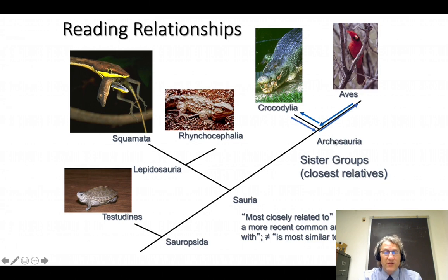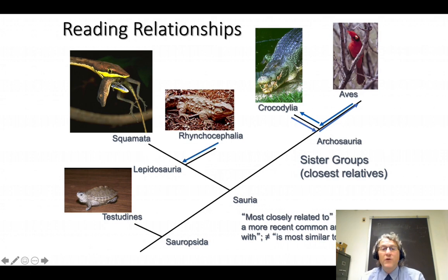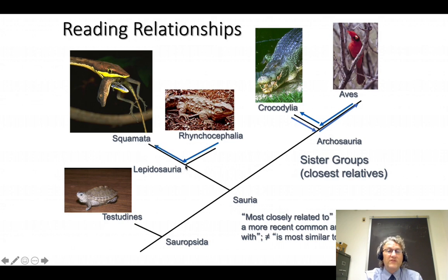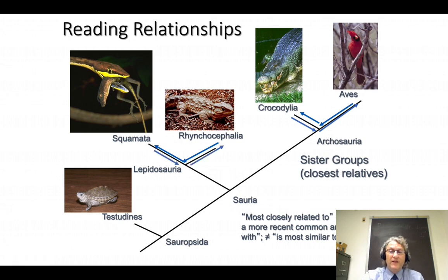What's the sister group to Rhynchocephalia — the tuatara, a group of a few species limited to New Zealand today though much more common in the geologic past? We start with Rhynchocephalia, go down to the first node we encounter — that node is called Lepidosauria, but that's not the sister group. The sister group is whatever else comes out of that node: Squamata, the lizards and snakes. Sister group relationships are always complementary.